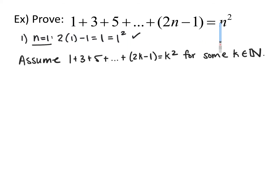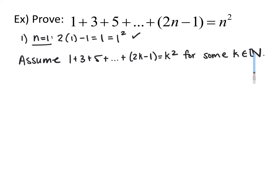Next, we're going to assume that this statement is true for some k. You can use n — it doesn't really matter. Many textbooks switch letters so you're proving it's true for a different number, keeping it general. So we're assuming that 1 plus 3 plus 5 plus so on plus 2k minus 1 equals k squared for some k in the natural numbers. Now we want to prove it's true for k plus 1.